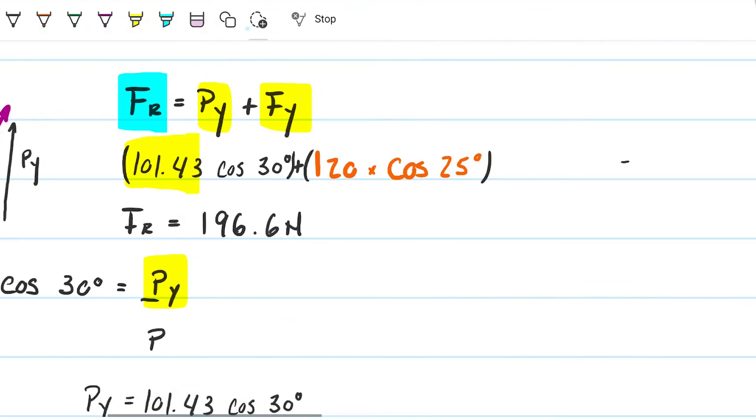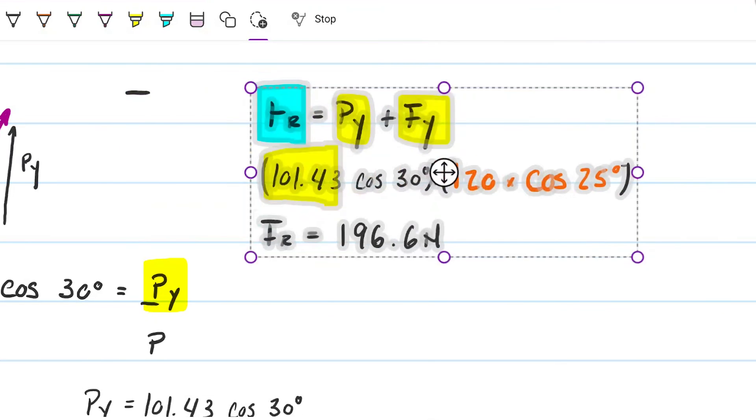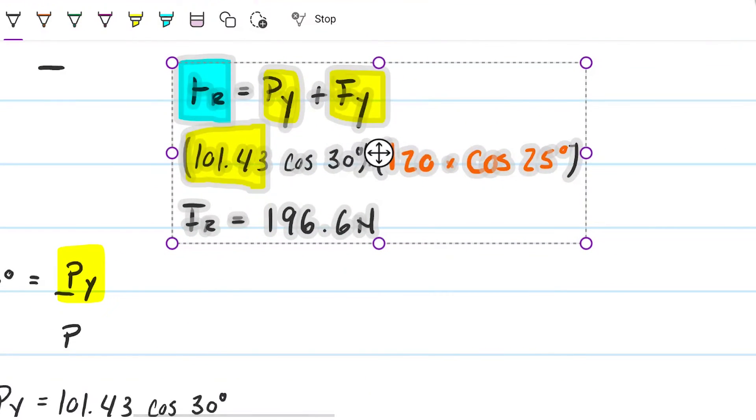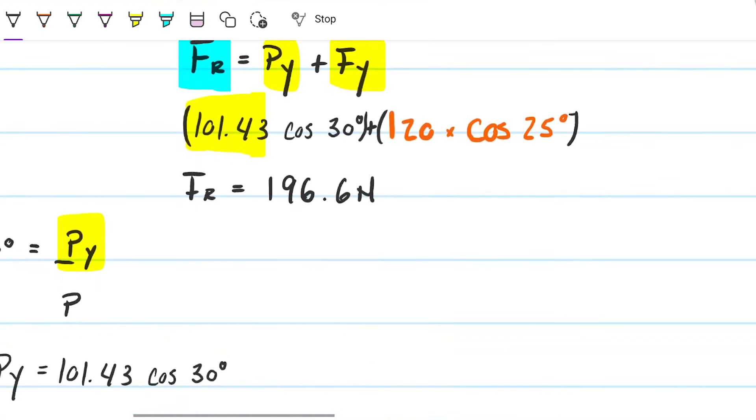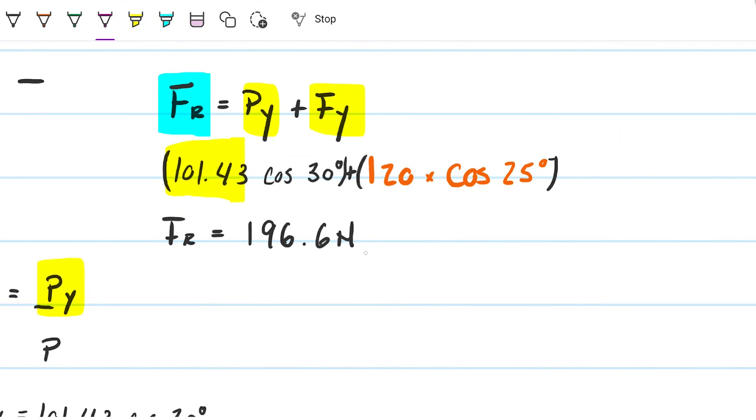Once again, let's make sure we're getting ourselves plenty of space so that we're not confusing anybody. Okay, so this is the resultant force. It's a vertical force, it's pointing upwards, and it's 196.6 newtons. And that's it for the problem. Part A is asking, what does P have to be, what is the magnitude of force P, this force here, or this force here, which is the same here.